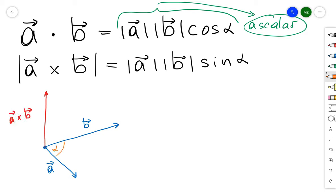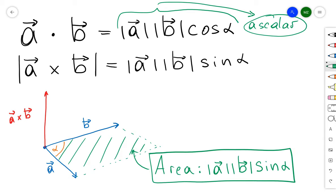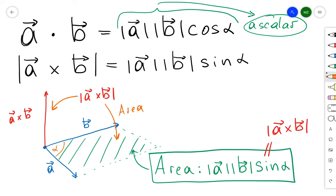Let's draw vectors A and B and ask about the geometric interpretation of the cross product. If we have vectors A and B, they form a parallelogram, and the area of that parallelogram is the product of the side lengths times the sine of the angle between them — that is, the absolute value of A times the absolute value of B times sine alpha. But that equals the magnitude of A cross B. So the magnitude of the cross product of two vectors equals the area of the parallelogram spanned by those two vectors.